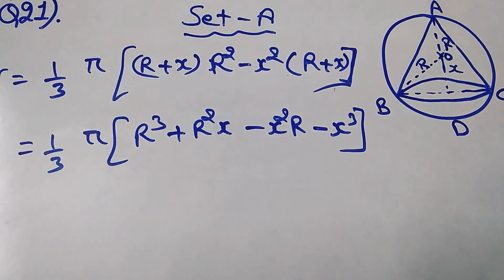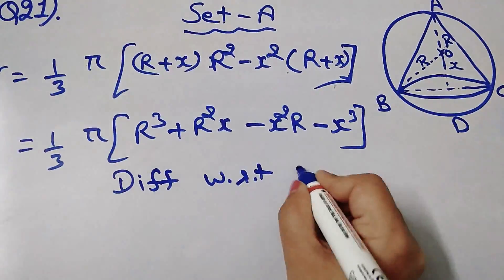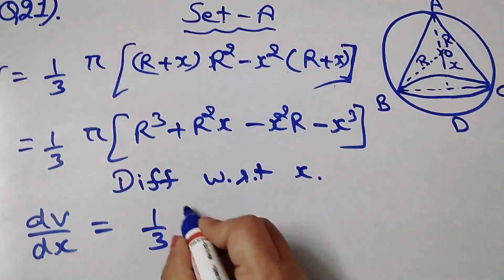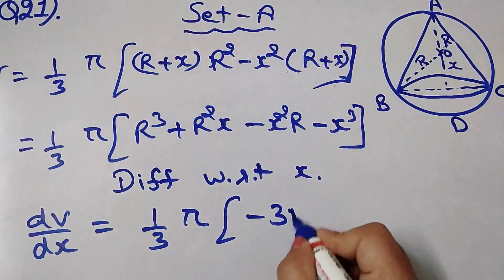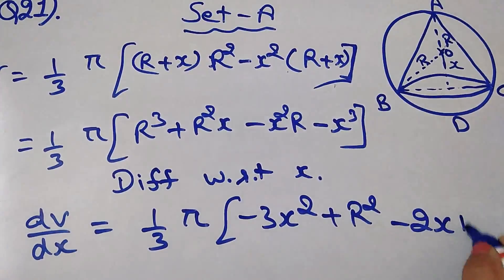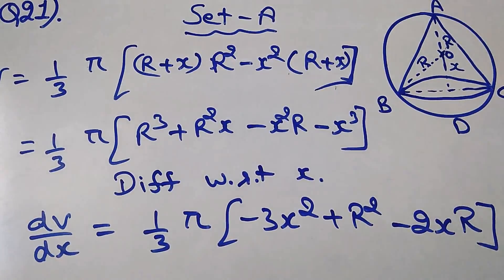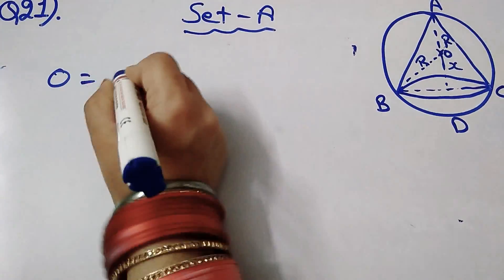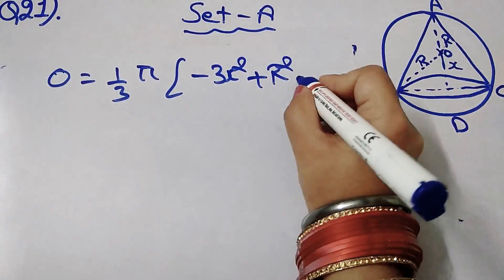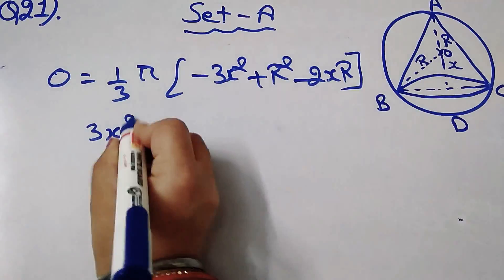In the next step we differentiate V with respect to x. So dV/dx equals (1/3)π times (R squared − 2xR − 3x squared). As we know, at a turning point dV/dx equals 0.